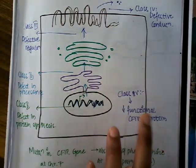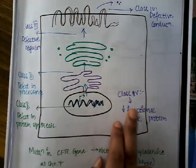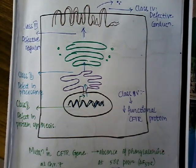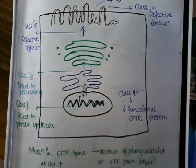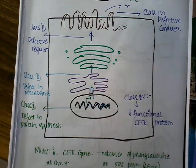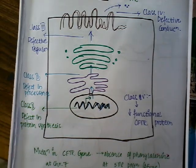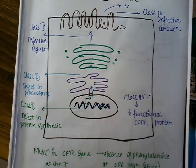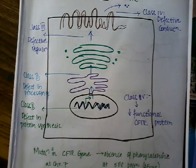So these are the major etiological features of cystic fibrosis. In our next class, we will learn about the different pathological effects that the cystic fibrotic transmembrane regulator gene has and the effect of this gene on different organs. Thank you for watching.